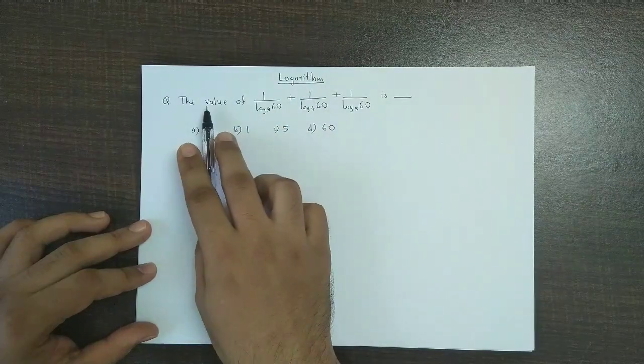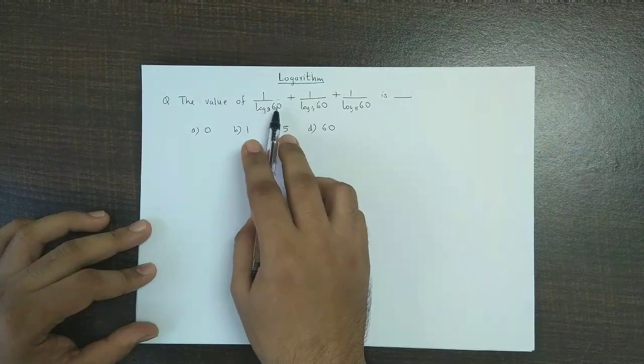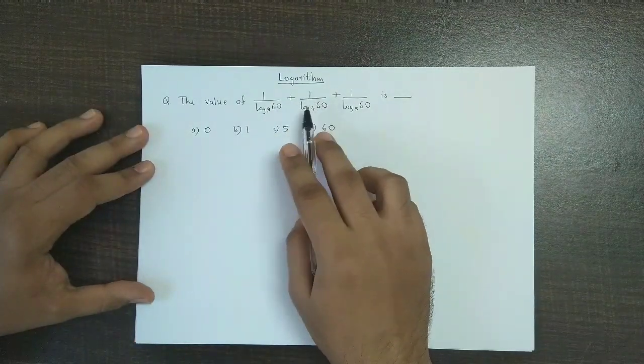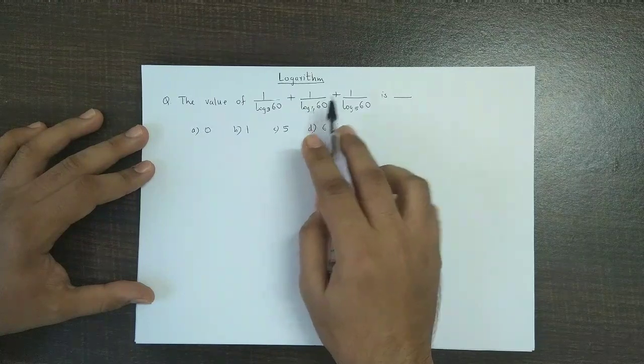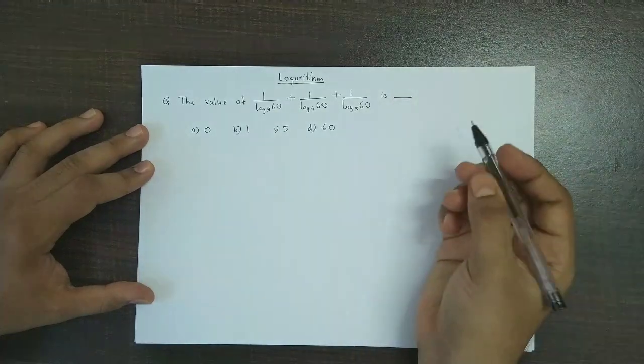The question is: the value of 1 upon log 60 to the base 3 plus 1 upon log 60 to the base 4 plus 1 upon log 60 to the base 5 is.